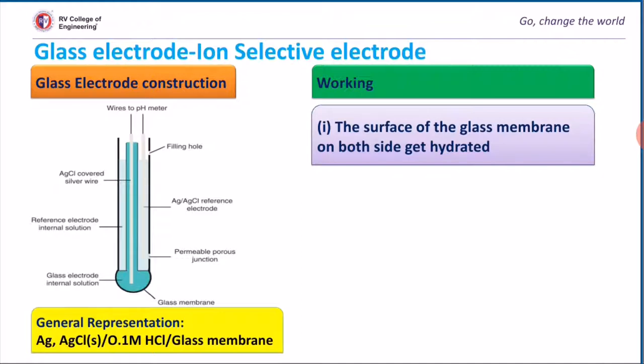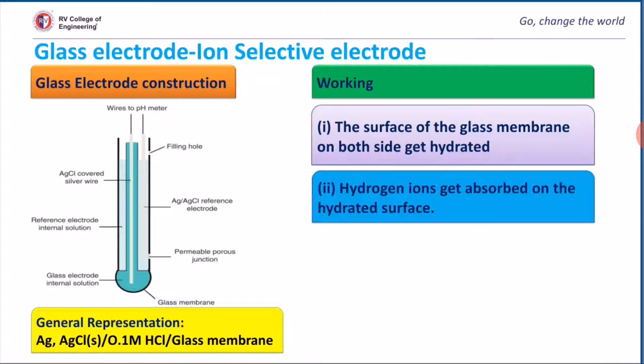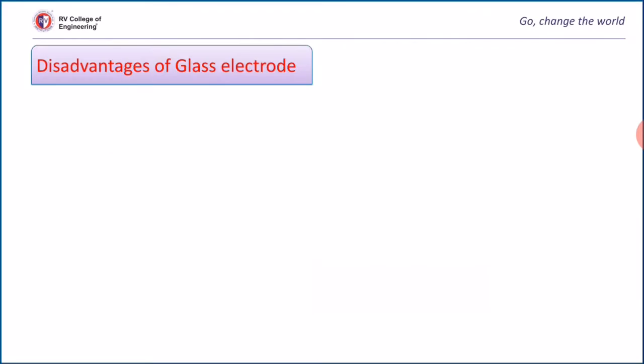In the first step, the surface of the glass membrane on both sides gets hydrated when dipped in different concentration solutions. Hydrogen ions get absorbed on the hydrated surface. In the third step, exchange of H+ ions for low atomic weight alkali ions takes place in the hydrated regions. H+ ions in solution get exchanged with sodium ions from the membrane. Because of this, a boundary potential exists.